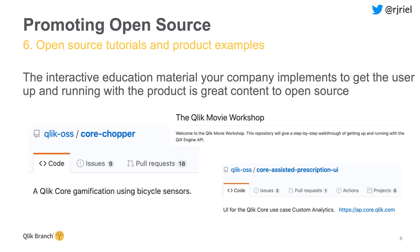Finally, if you don't have anything inside R&D or your product to open source, one great way to get involved in the open source community is to open source any tutorials or product examples you might have. The interactive education material your company uses to get users up and running is great content to open source. At Qlik we have the Qlik Movie Workshop, which gets people up and running with the engine API using a React app showing movie data. We also have Core Chopper, a game that connects our engine to bike sensors to make a helicopter move depending on how hard you pedal, plus websites focused on different business use cases.